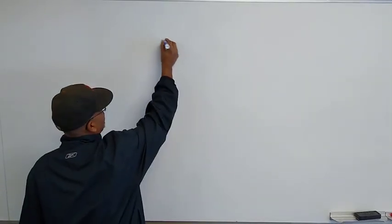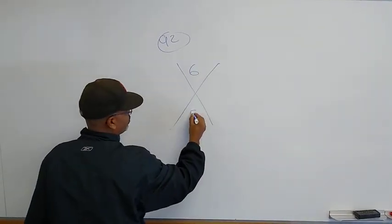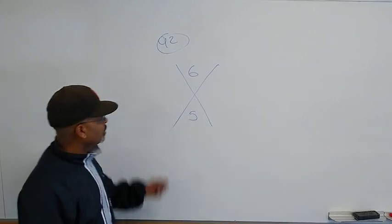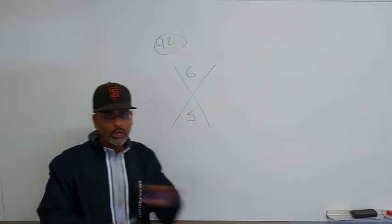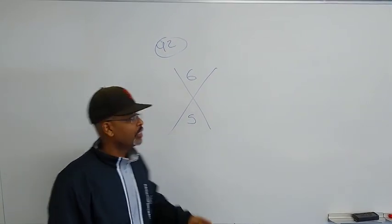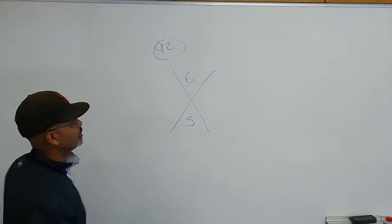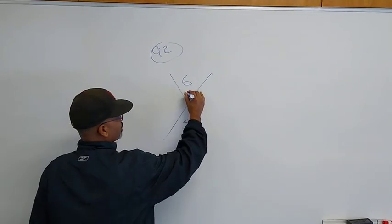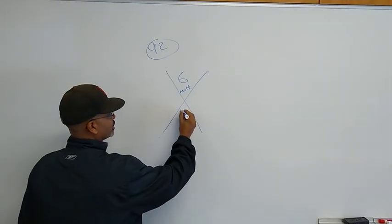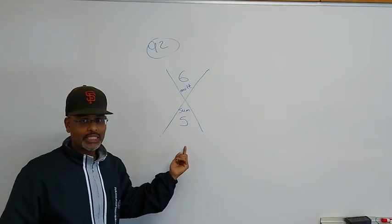So the first one I want to talk about is assignment number 92, and here is a problem that I want to discuss as far as how do we do assignment number 92. So I'm going to start off with just numbers. We're not looking at any equations or expressions right now. We just want to look at how does the X method work. So if I have 6 up here, 5 down here, what am I supposed to do with this X method? Remember, product at the top and the sum on the bottom.